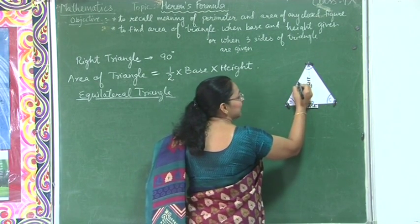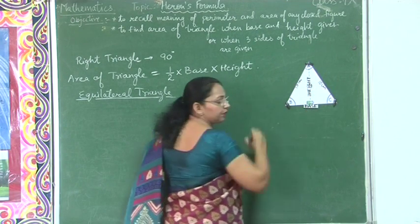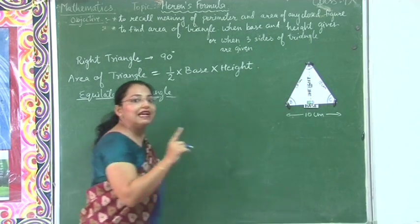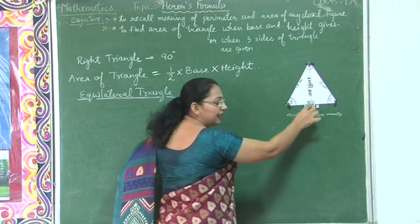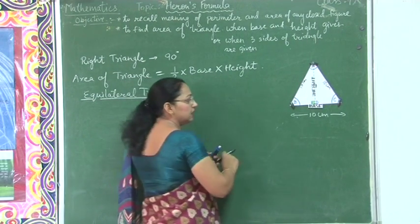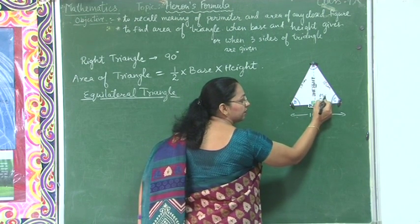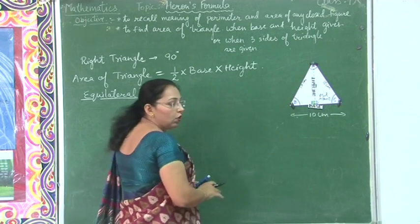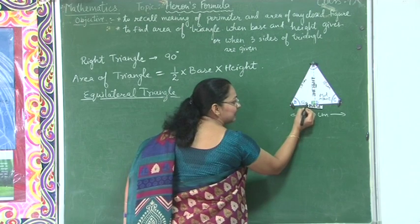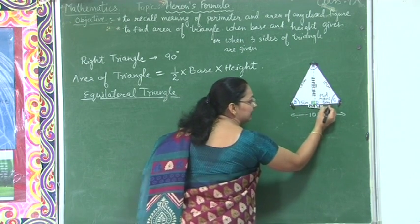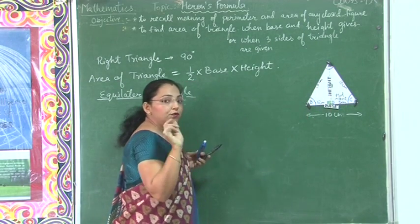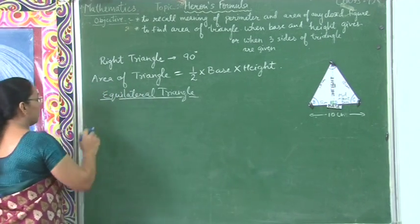Suppose this equilateral triangle has a side of 10 cm each, so the third side BC is also 10 cm. An equilateral triangle has a special property: whenever you draw a perpendicular to any of its sides, it always passes through the midpoint of that side. So D is the midpoint, dividing BC — which is 10 cm — into BD = 5 cm and DC = 5 cm. To find the area, my height is still unknown, so the first target is to find this height.